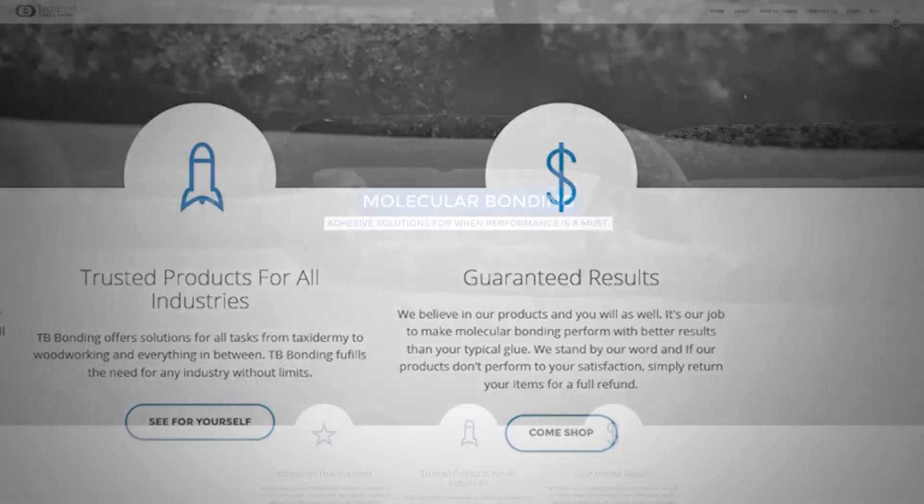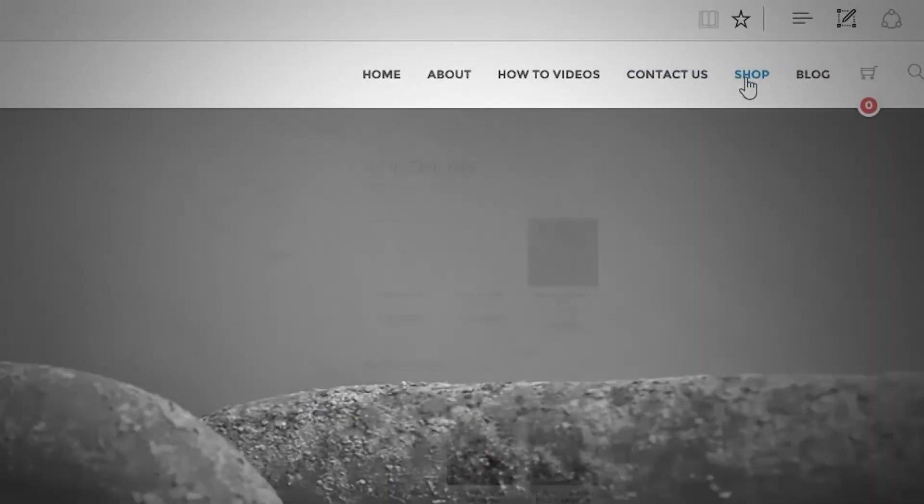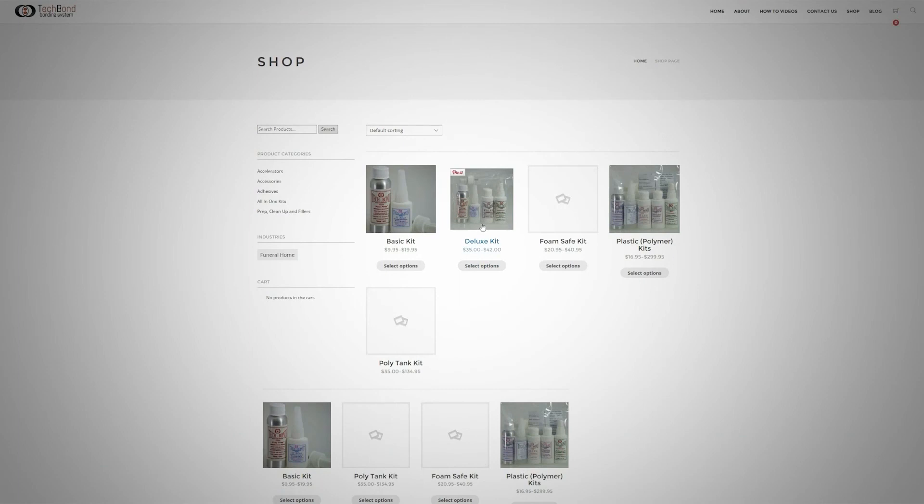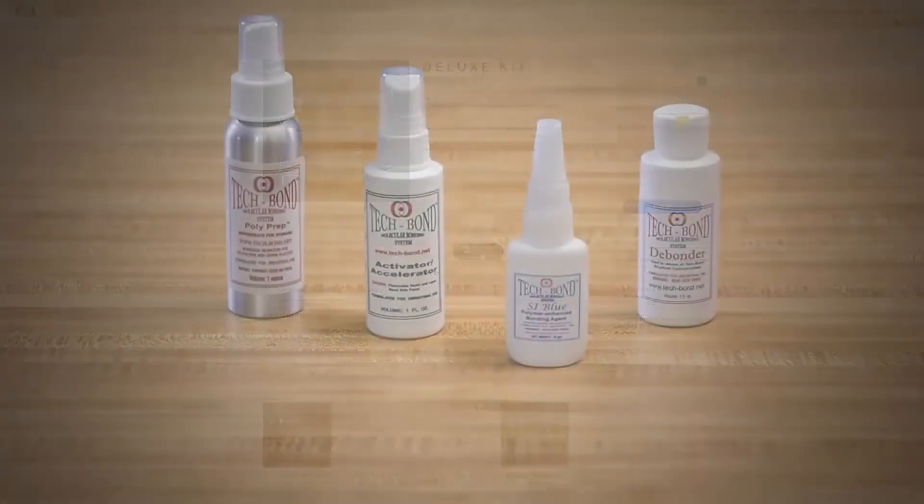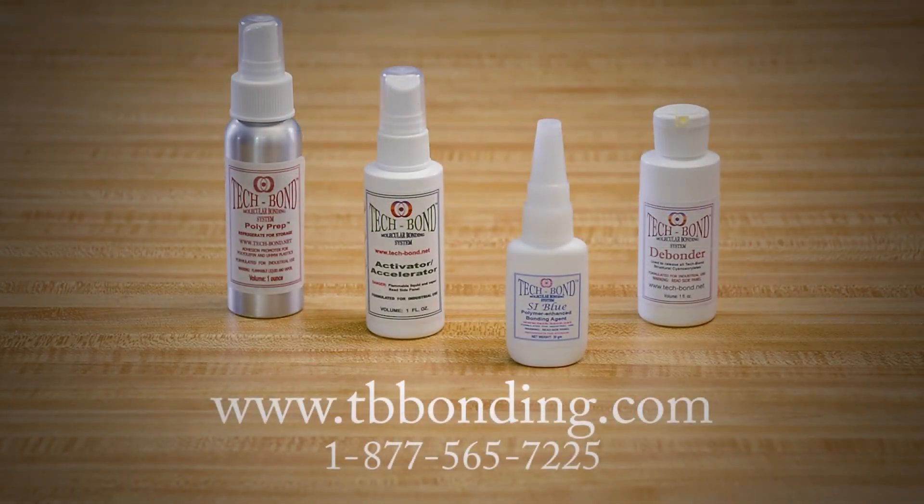You can purchase any of our items individually or, to save money, you can choose one of our kits. Kits will save you 15% over the individual pricing. Just visit the shopping cart at www.tbbonding.com or give us a call at 1-877-565-7225. Happy repairing!